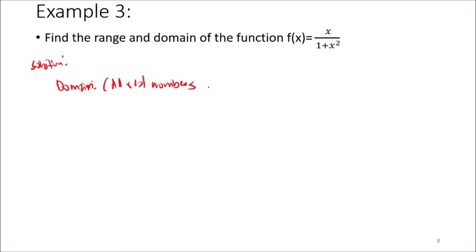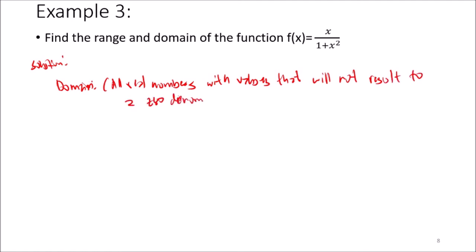This is a rational function, so the domain consists of all real numbers that will not result in a zero denominator. The denominator is 1 + x². Since x² is always non-negative, 1 + x² is always at least 1, so the denominator can never equal zero.